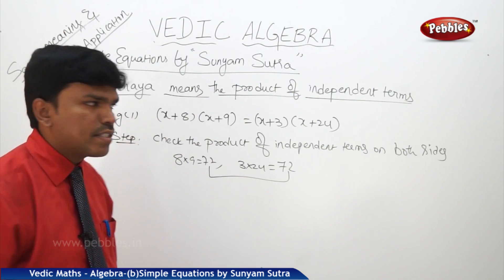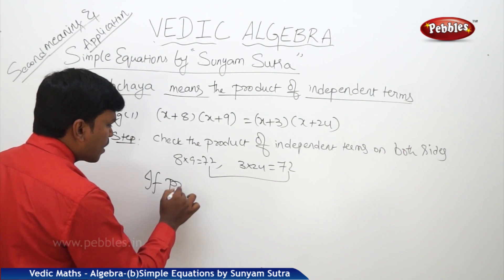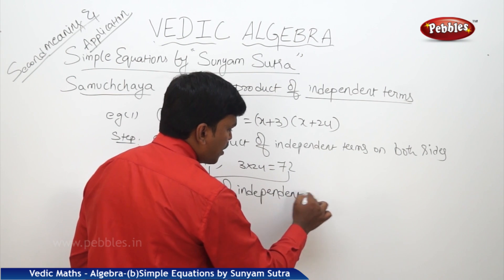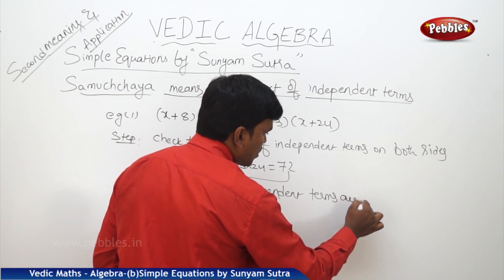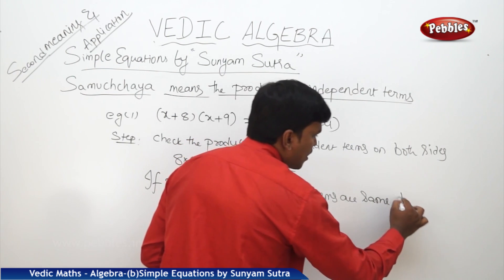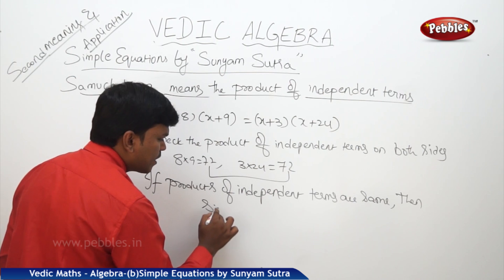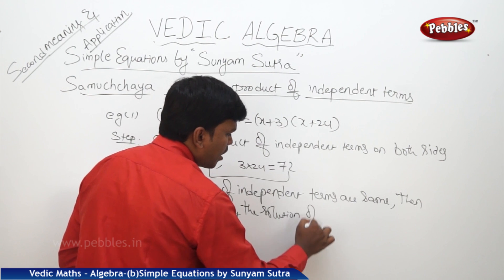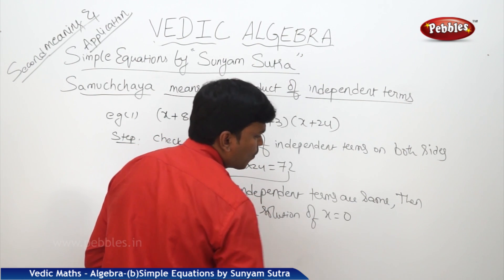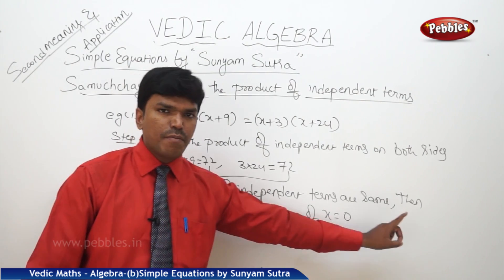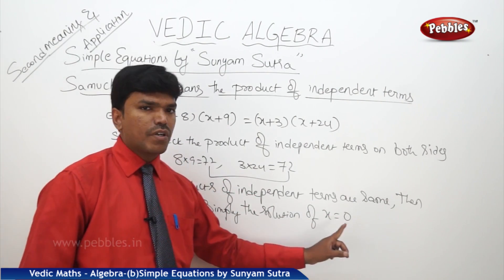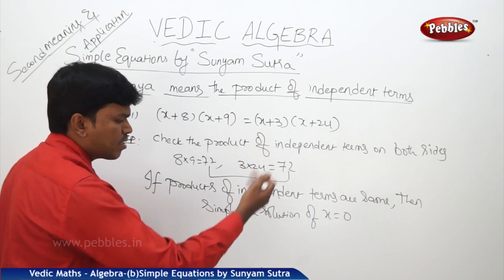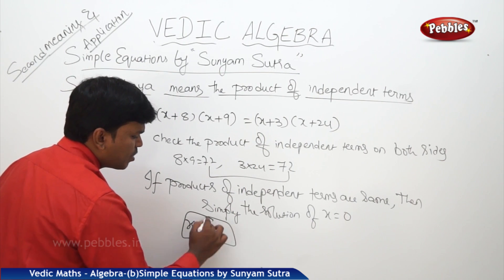If the products of independent terms on both sides are the same, then simply the solution is x = 0. Here, if you observe, both products of independent terms on both sides are 72 and 72 — both are equal. Hence, I can say directly x = 0.